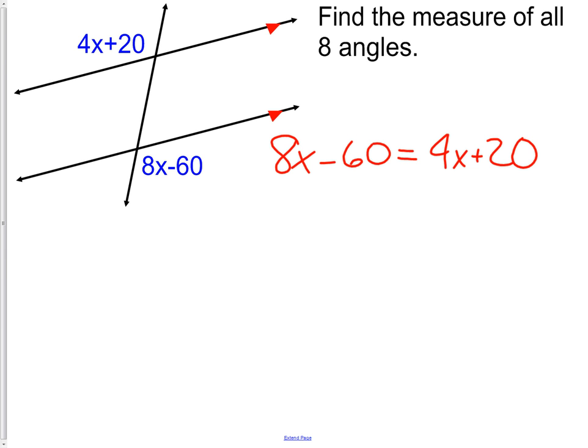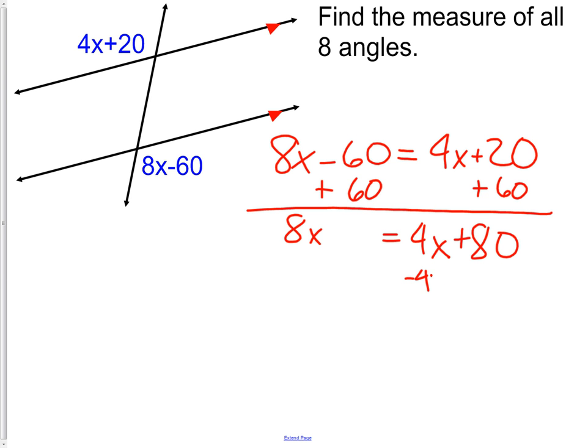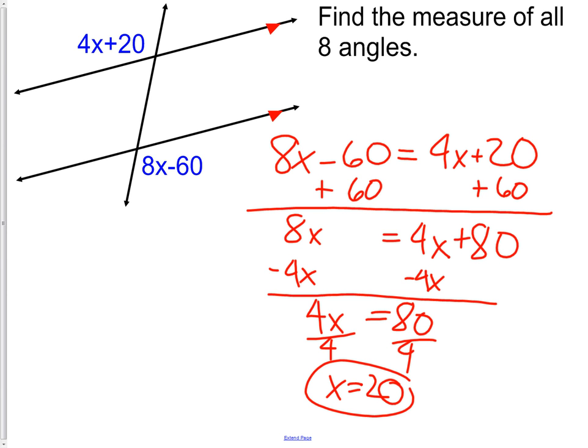What you should have done is add 60 and minus the 4x. We will get 4x equals 80, which means x equals 20. We're not done. The question asks us to find the measures of all eight angles. We need to put that 20 back in. 8 times 20 is 160 minus 60 means this angle is 100.